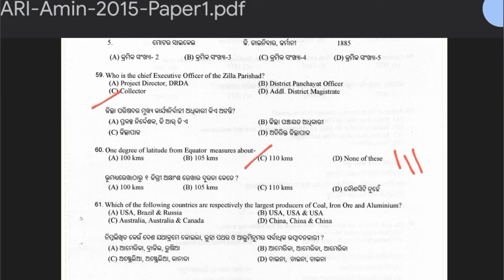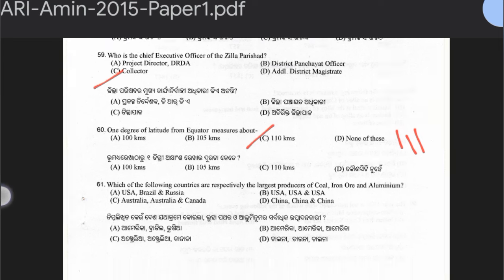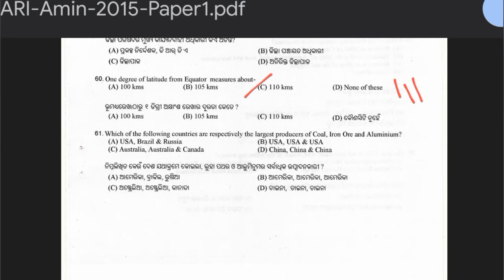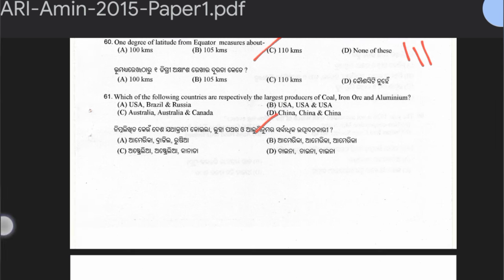Question 61: Which countries are respectively the largest producers of coal, iron ore, and aluminum? Options include USA-Brazil-Russia, USA-USA-USA, Australia-Australia-Canada, or China-China-China. The answer is option D — China, China, China. China is the largest producer of coal, iron ore, and aluminum.